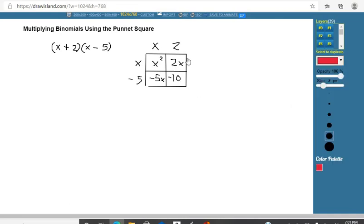Okay, now I want to look across here and combine these like terms. So when I write my solution, I'm going to write the x squared, then I'm going to combine negative 5x and 2x to get negative 3x. And then after that, I have minus 10. So my solution is x squared minus 3x minus 10.